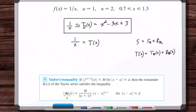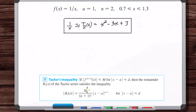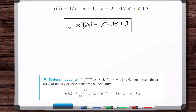With Taylor's inequality, we're trying to bound the absolute value of R sub n of x. We already know what n is and what a is — we chose them. So in order to get this inequality, all we need is capital M. Taylor's inequality is all about capital M. We need to find it. Capital M is determined by taking the absolute value of the n plus one derivative of the function. For our restricted x range, d equals 0.3.